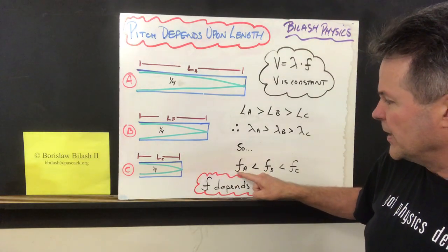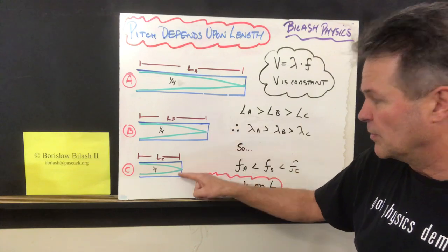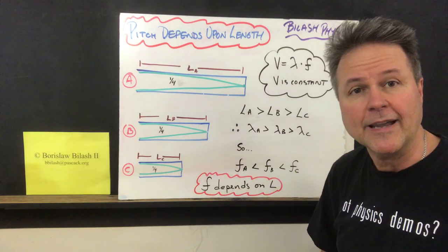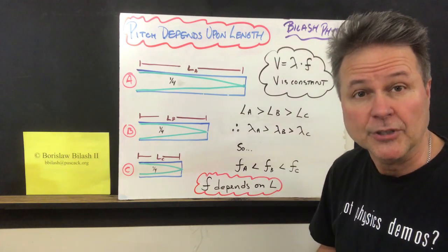Consequently, the frequency here is smaller than b, and b is smaller than c. So what we get is that frequency depends on the length of the tube.